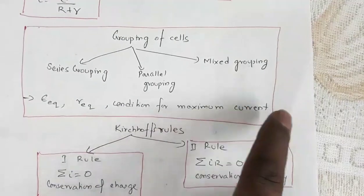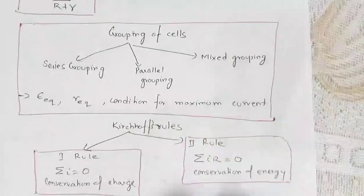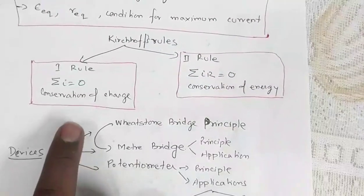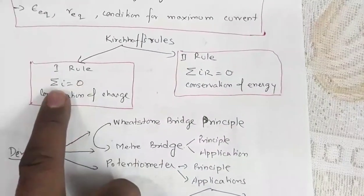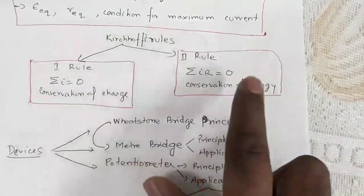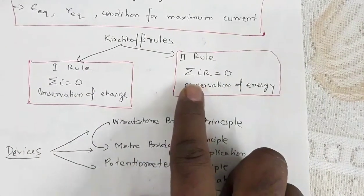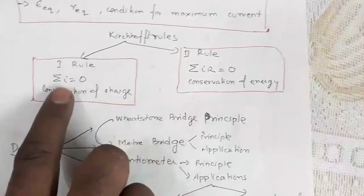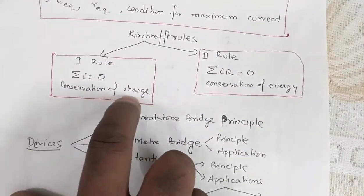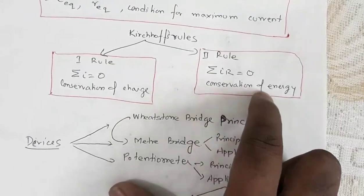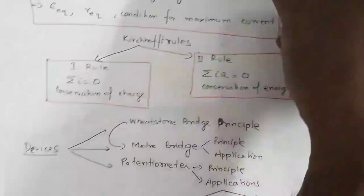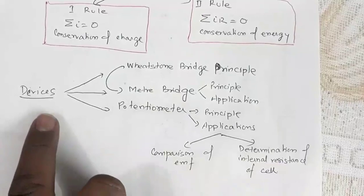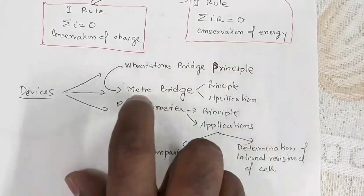Then comes Kirchhoff's rules — two rules. First rule: the algebraic sum of currents meeting at a point is zero. Second rule: the algebraic sum of the product of current and resistance for a closed loop is zero. The first rule follows from the principle of conservation of charge; the second follows from conservation of energy.